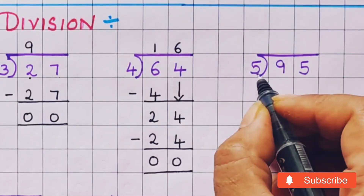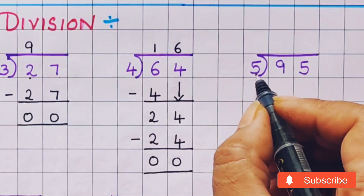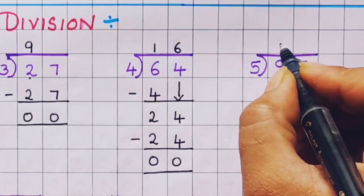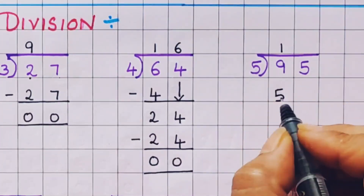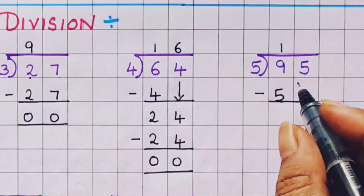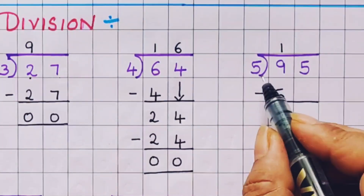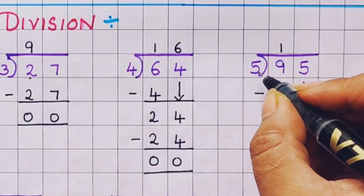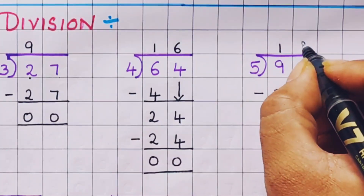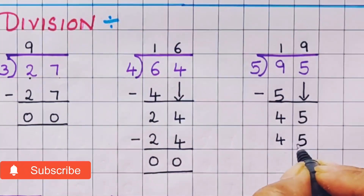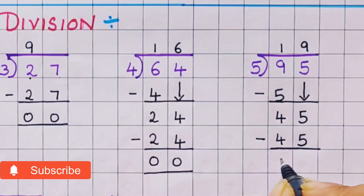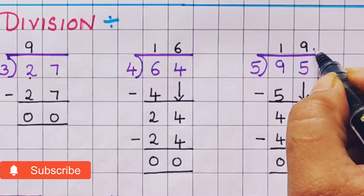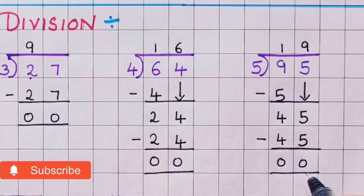Next problem: 95 divided by 5. Table of 5: 5 ones are 5, 5 twos are 10. Since 9 is less than 10, we use 5 ones are 5. Subtraction: 9 minus 5 is 4. Bring the next digit down to get 45. In the table of 5: 5 nines are 45. Subtraction gives 0. So 95 divided by 5, the quotient is 19 and the remainder is 0.